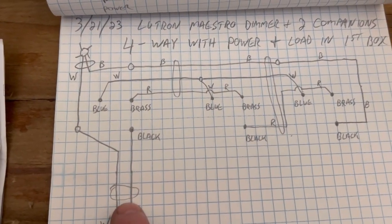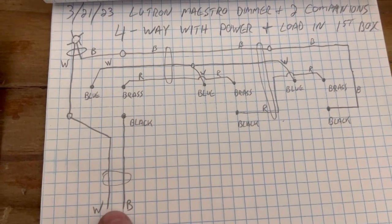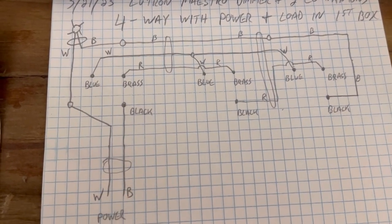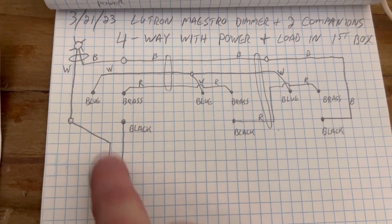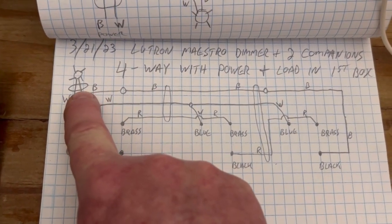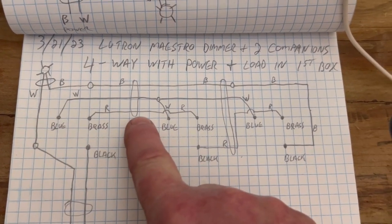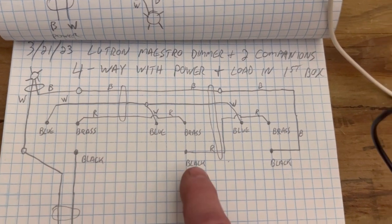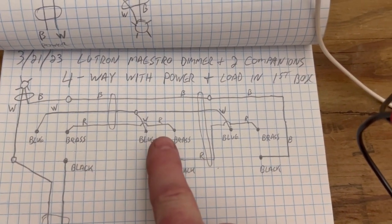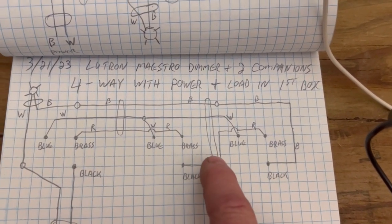These ovals are just representing a cable. So my power coming in is just a 12-2 cable. The cable that goes up to the light is a 12-2. The cable between the first switch and the second switch is a 12-3, and the cable between the second switch and the third switch is a 12-3.